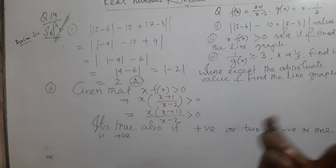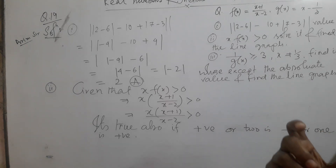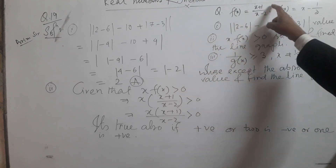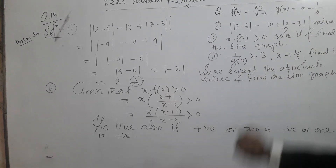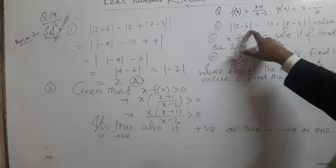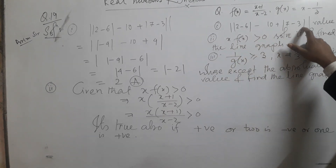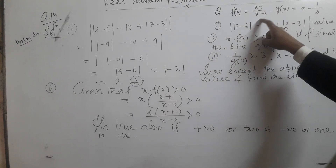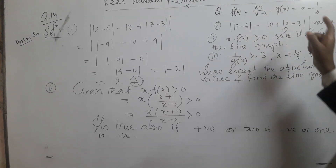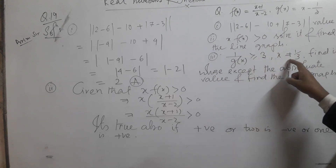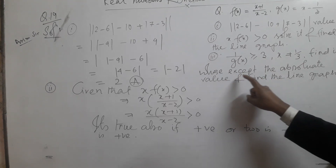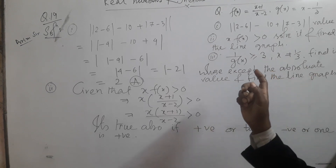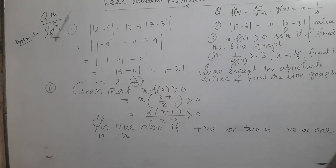Hello learners, viewers, and students who are watching my channel regularly. We will discuss this math: f(x) = (x+1)/(x-2) and g(x) = (x-1)/3. The first problem involves finding the modulus value of 2 minus 6 plus 7 minus 3. The second problem is to find where x times f(x), that is x(x+1)/(x-2), is greater than 0. We will also find the line graph using absolute values.